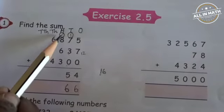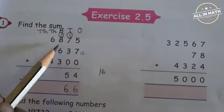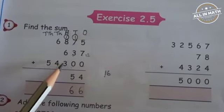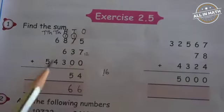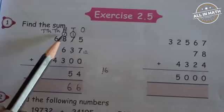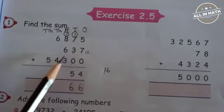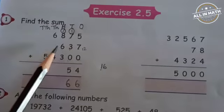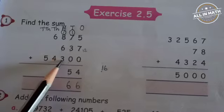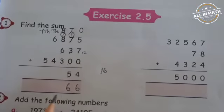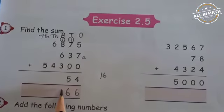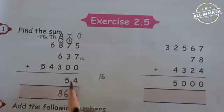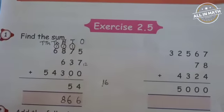Now, add all the numbers in the 100's column: 1, 8, 6, 3. There is no number here. So add 1 and 8 — it is 9. 9 plus 6 is 15. 15 plus 3 is 18. So write 8 here and 1 in the 1000's place.